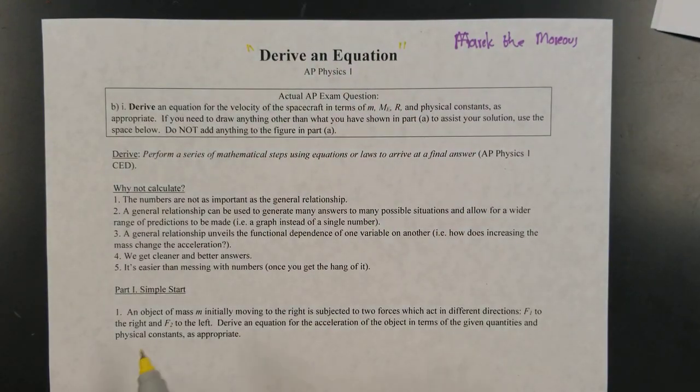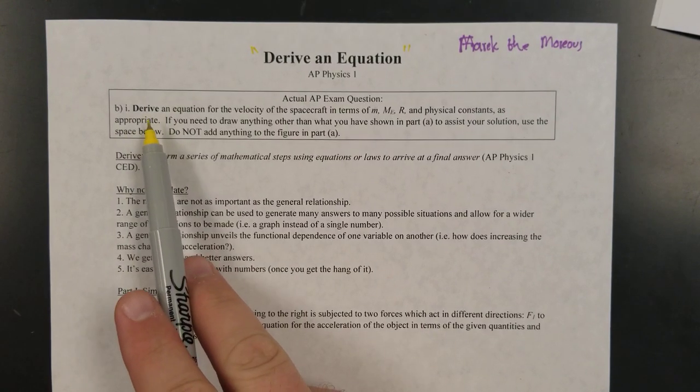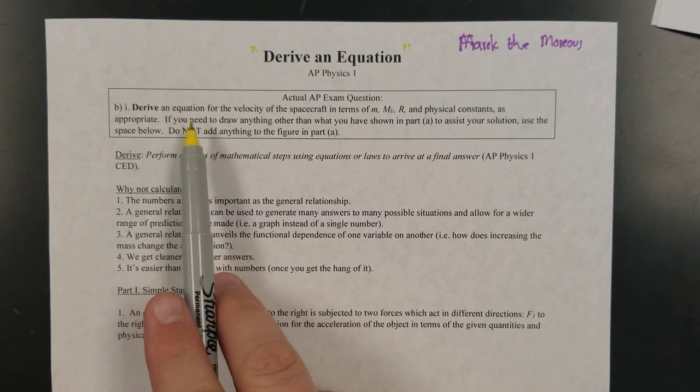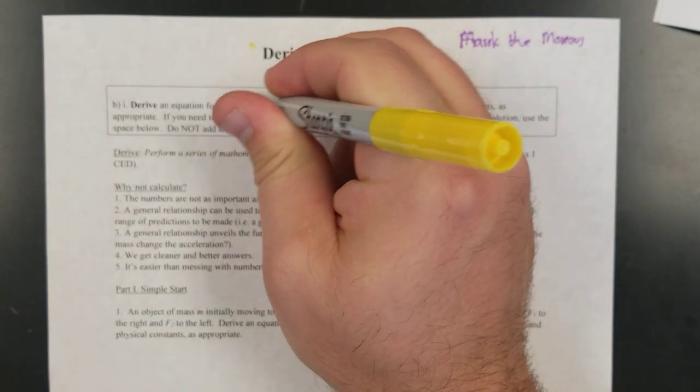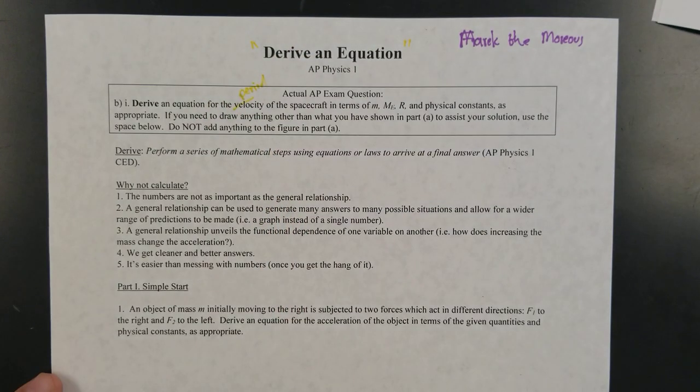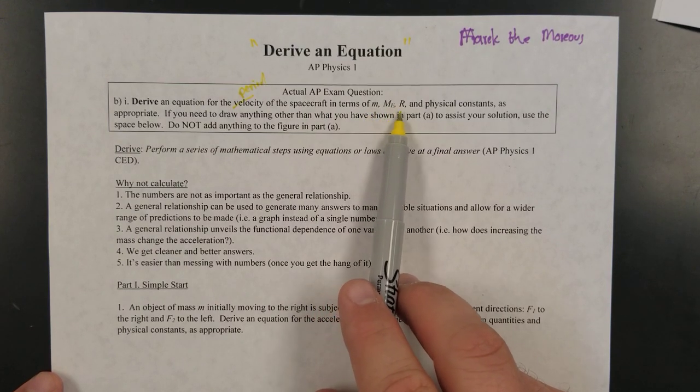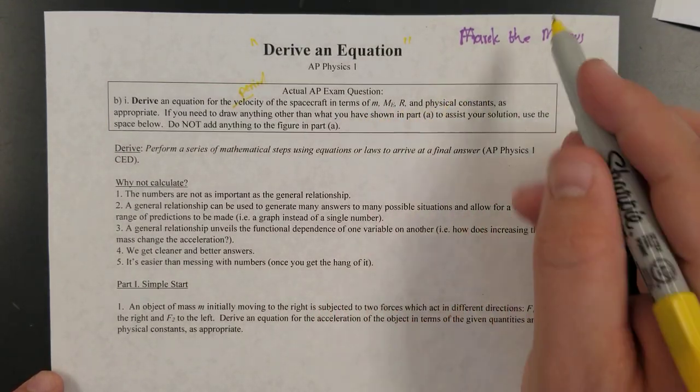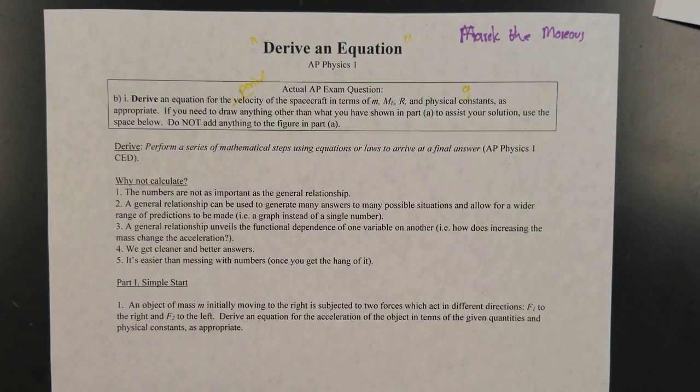specifically on this skill that we're going to refer to as derive an equation. And so the first thing I have on here for you is an example from an actual AP Physics 1 exam, where the question was derive an equation for the velocity of a spacecraft, actually was the orbital period, but we're not yet at a point where we really know what that means, of the spacecraft in terms of little M, big M subscript E, R, and physical constants such as G, for example, as appropriate.